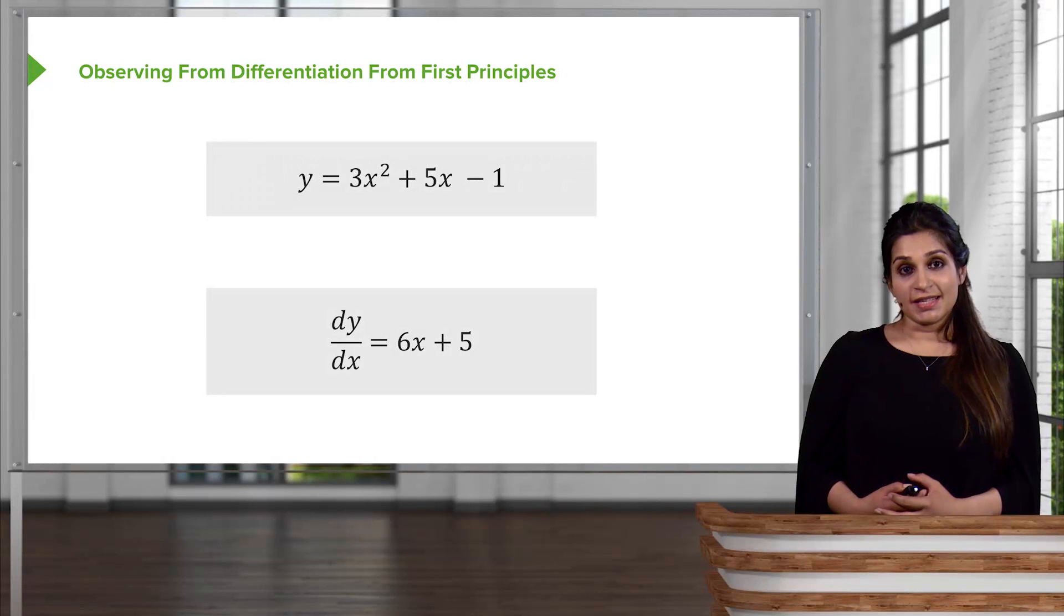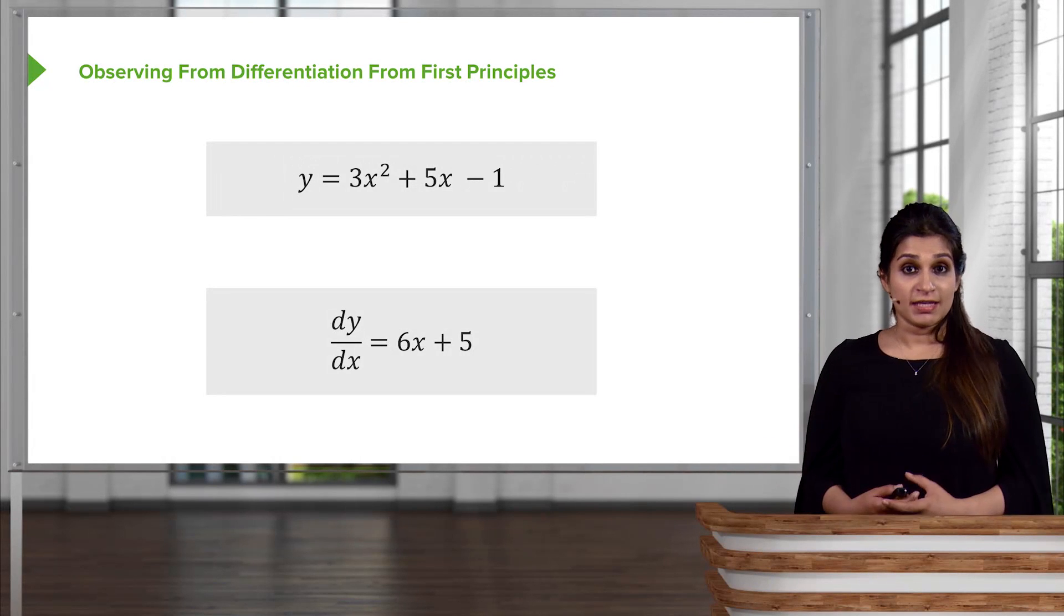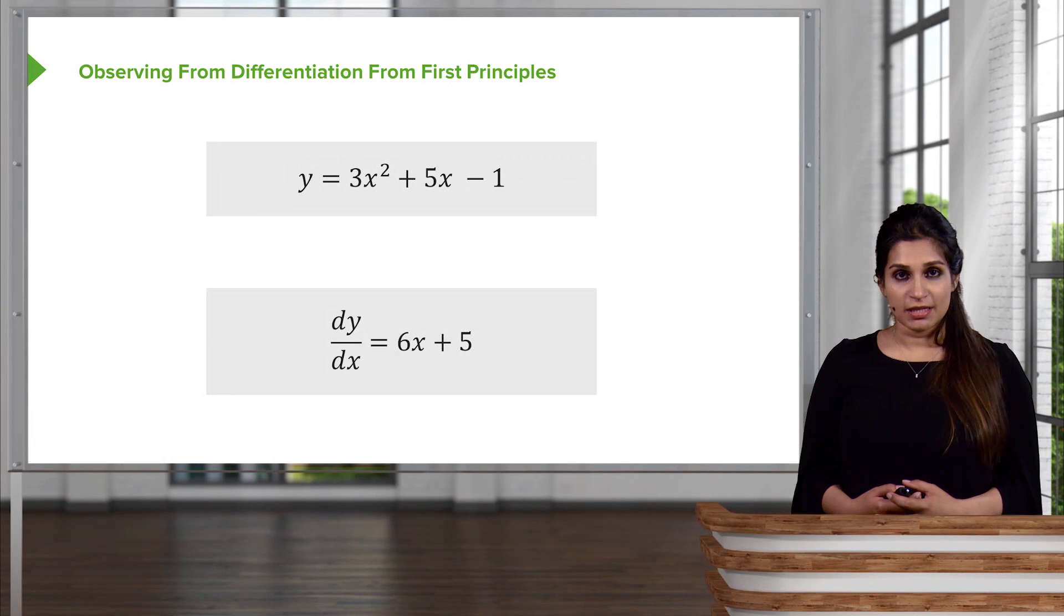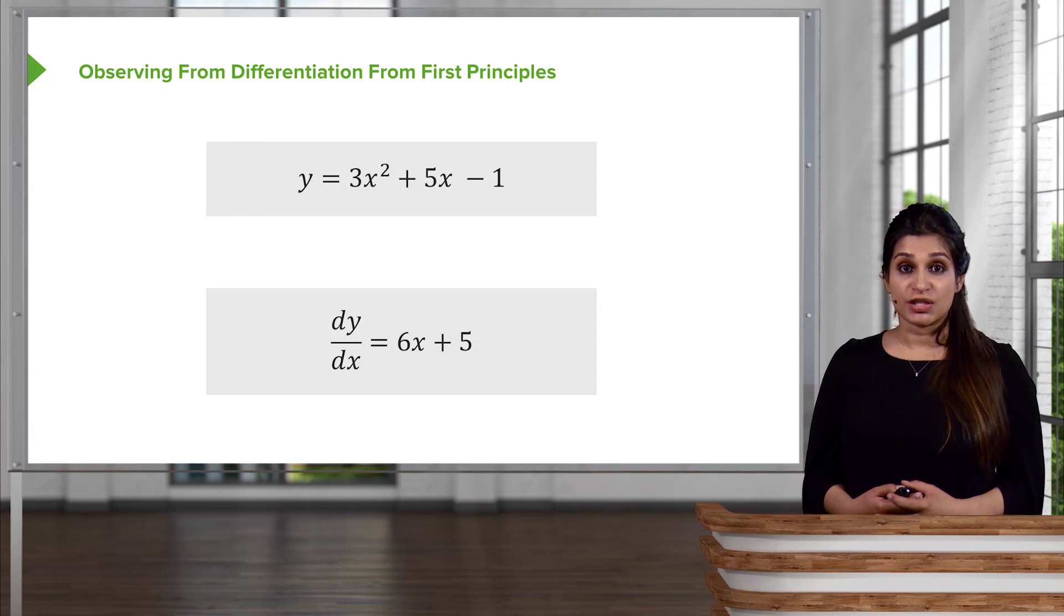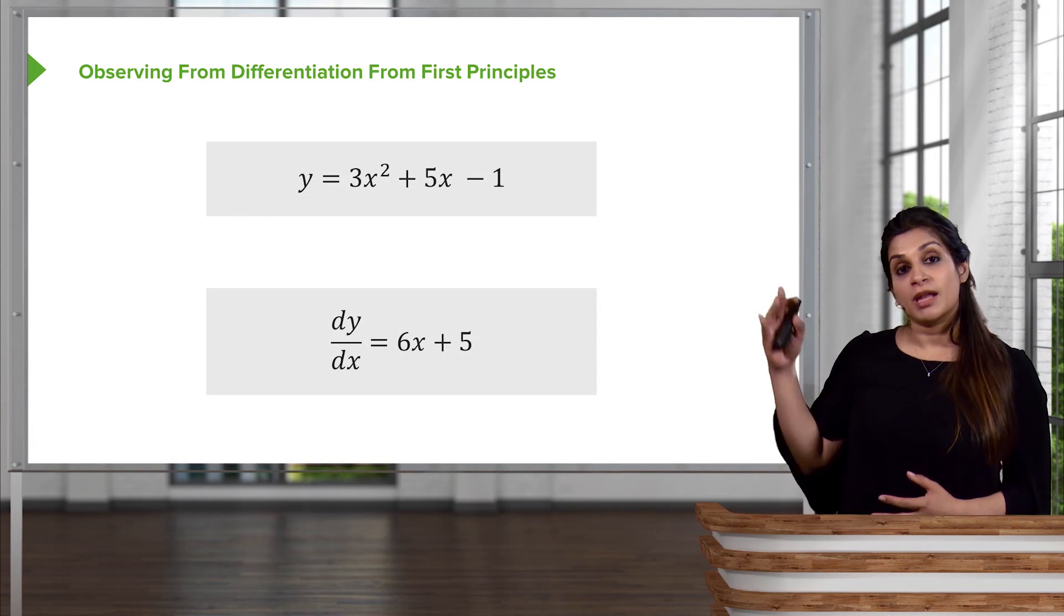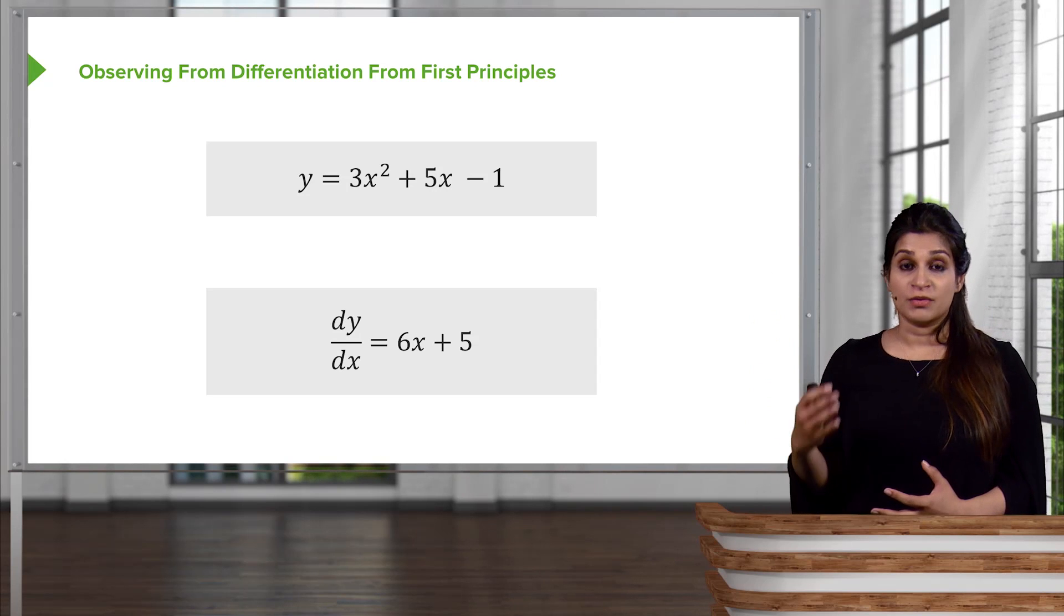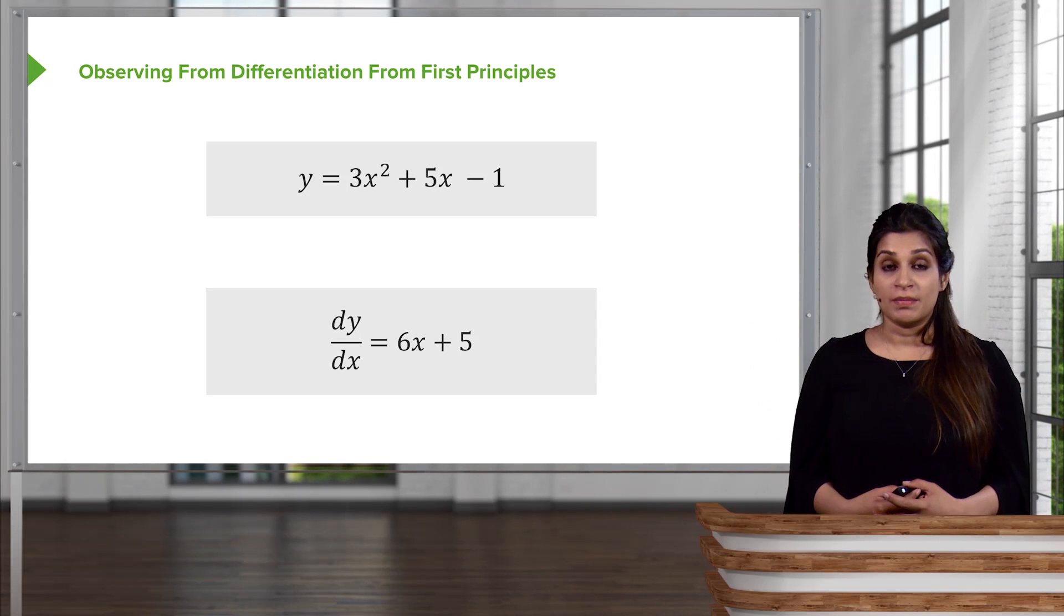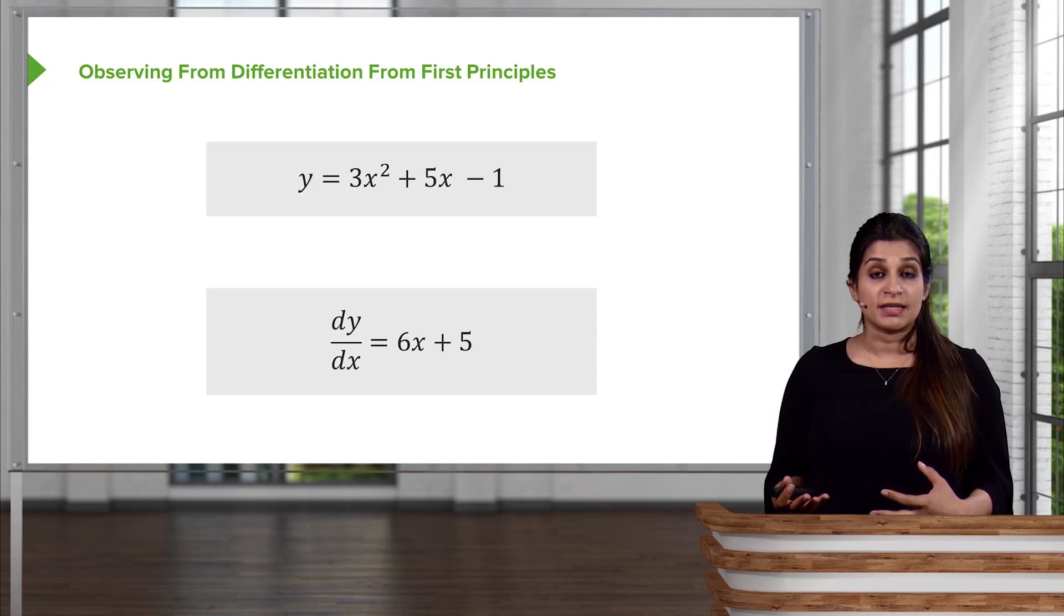Previously, we found the gradient of a function like y = 3x² + 5x - 1 using the definition of first principles. We applied the really long formula and came to the final answer, where we made delta x, or the limit of delta x, go to zero.